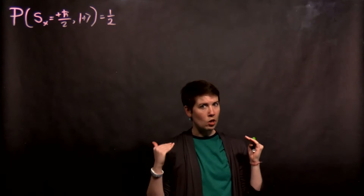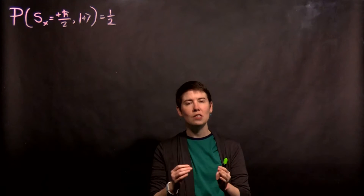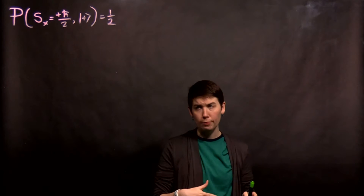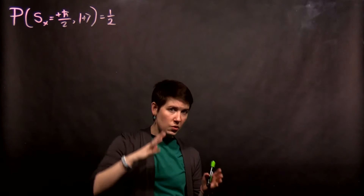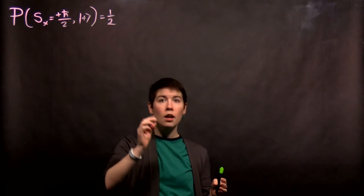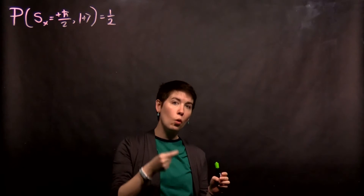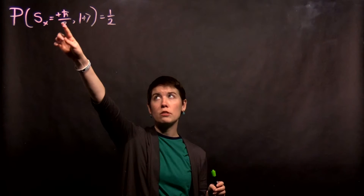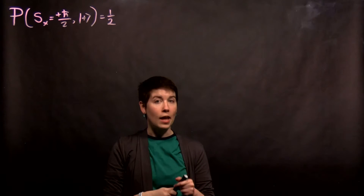We're still starting with quantum mechanics, and the idea here is that we can do the experiment and make the measurement. We can see that if we start with our initial state being spin up in z, and we then make a measurement in x and ask what is the probability that we measure spin up in x, we in fact see that it's one half.